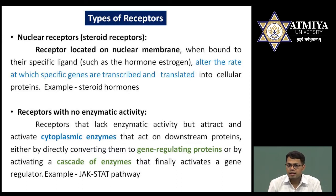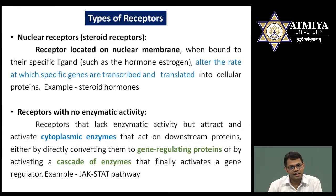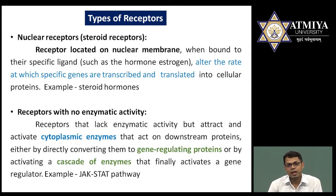The fifth type is receptors with no enzymatic activity. These also lack enzymatic activity, similar to serpentine receptors, but differ in that serpentine receptors are bound to G proteins which indirectly activate membrane-bound enzymes, whereas in receptors with no enzymatic activity — the best example is the JAK-STAT pathway — once a ligand binds, enzymes present in the cytoplasm bind to the receptor and become activated. JAK is a receptor on the cell membrane, and STAT is a separate protein with enzymatic activity in the cytoplasm. Once JAK is activated, STAT binds to JAK, becomes activated, and conveys the signal.